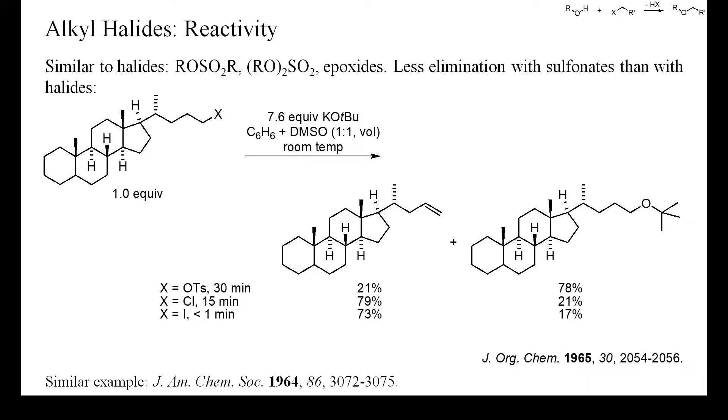Alkyl sulfonates, sulfates and epoxides can also be used as electrophiles for the alkylation of alkoxides. Sulfonates and sulfates seem to undergo elimination much less readily than alkyl halides and are therefore superior electrophiles for the preparation of ethers from alcohols.